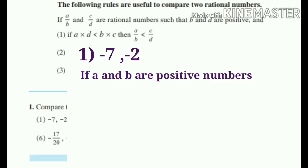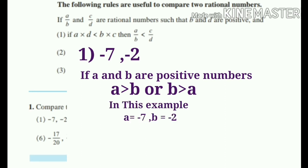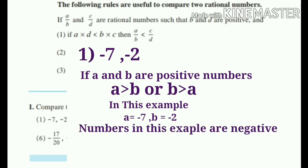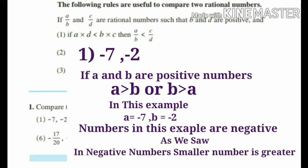First question is minus 7 comma minus 2. If A and B are two positive numbers, then A is greater than B or B is greater than A. In this example, minus 7 is the negative number and minus 2 is also negative number. If we having positive numbers, then 7 will be greater than 2. Now, in this example, A is equal to minus 7, B is equal to minus 2.